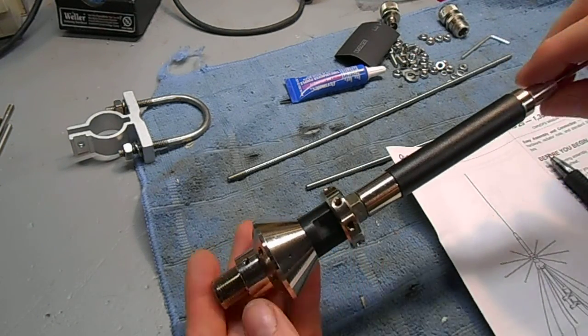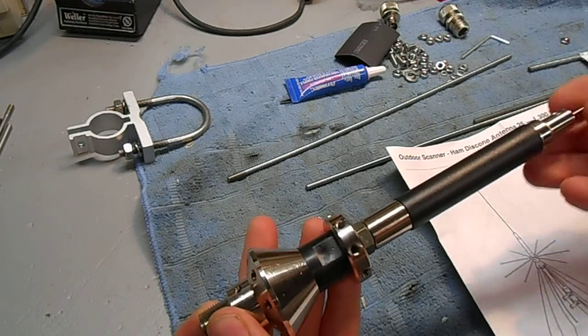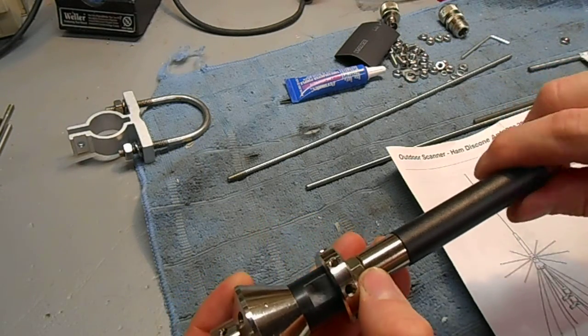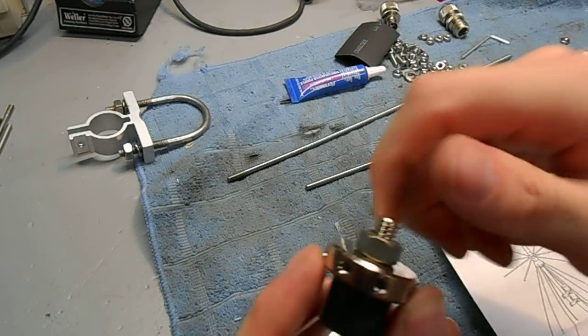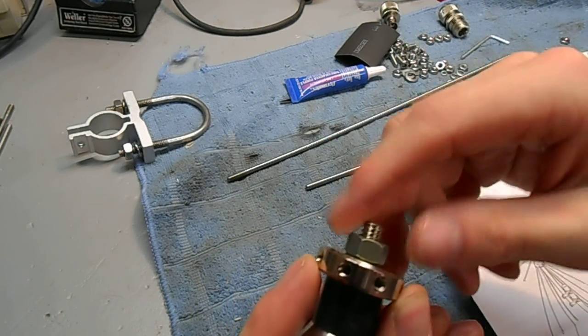If you don't require the 50 MHz response, the antenna will operate without this top loading coil. You just replace it with a standard 5-16ths nut like that.